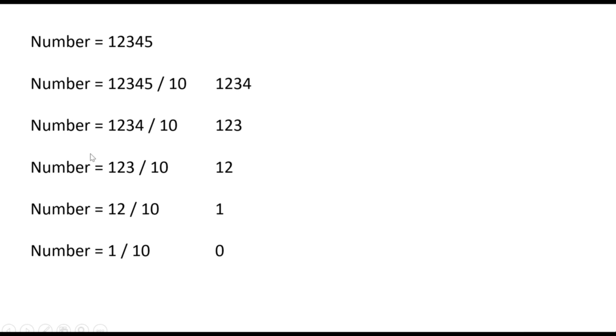So how many times have we tried to divide this number? Let's count: 1st, 2nd, 3rd, 4th, and 5th. And these were exactly the number of digits we had in the number. So this is the logic — whatever number you have, keep dividing by 10 and continue these steps until the number becomes 0. That is how you can identify how many digits are present in a number.